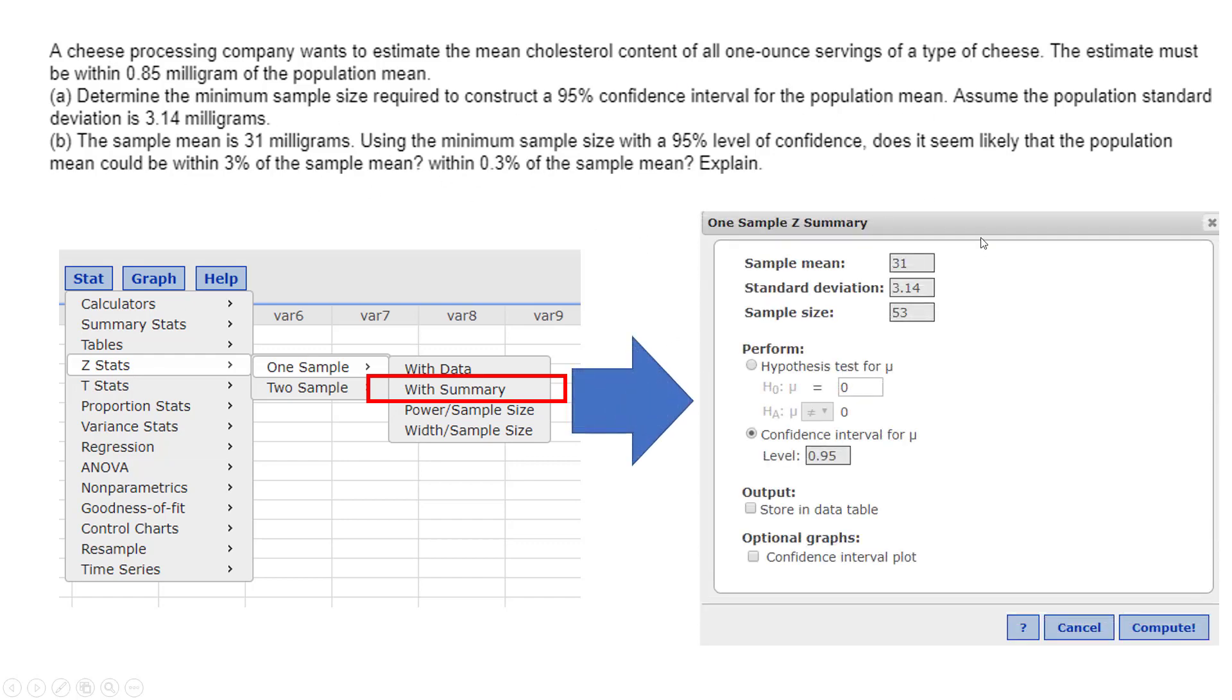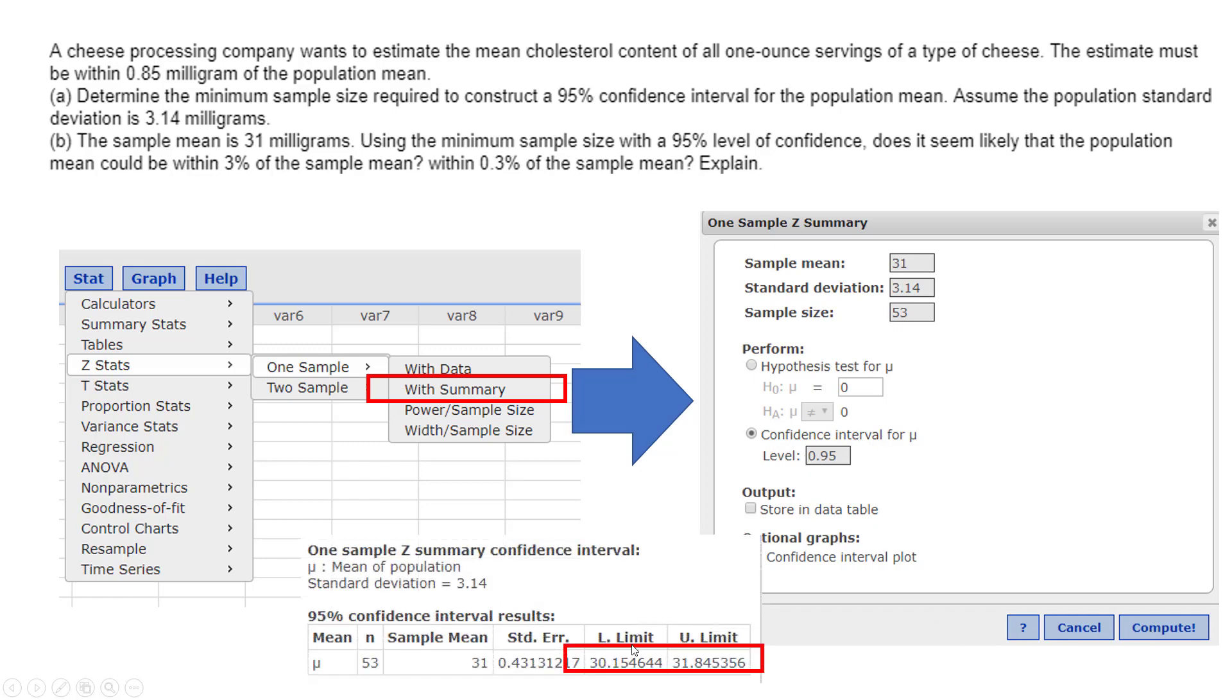They gave me the sample mean of 31. They gave me the population standard deviation of 3.14. And then they said to use what you got on part A for your sample size. Be sure you have the confidence interval clicked, and you have the right confidence, and you click Compute, and there is your confidence interval.